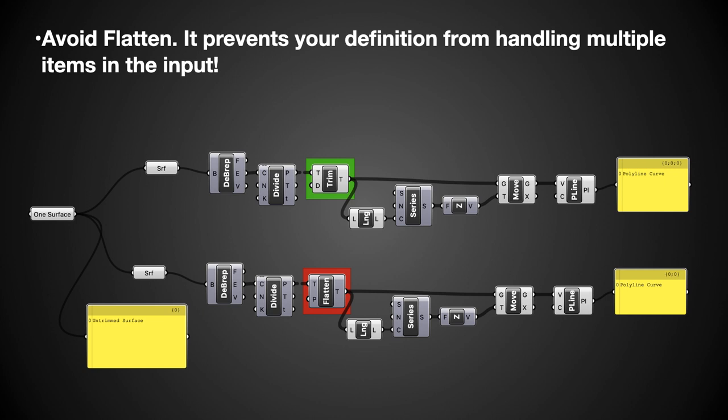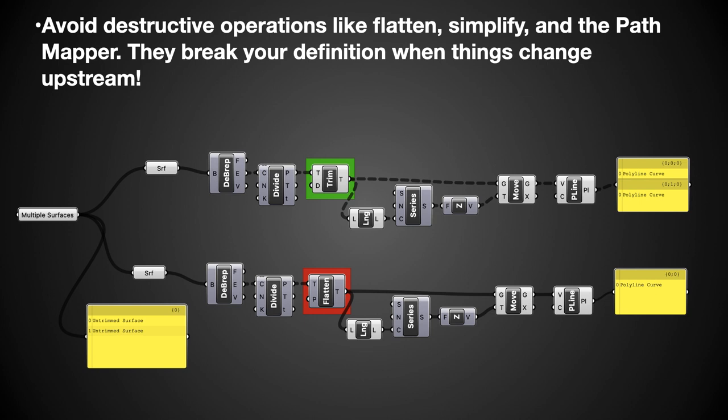You should avoid flatten in most cases. It prevents your definition from handling multiple items in the input. So these two routines look identical in the current situation where I've got one surface on the left hand side. I'm feeding in one surface and I get one polyline out the other side. And both versions of this operation seem to do that just fine. No problem. One of them is using flatten and one of them is using trim tree or shift paths in order to relatively flatten the data that's going into it. And the reason why this is important is because flatten is a destructive operation. And when I feed it multiple surfaces, it's going to give me back a single polyline instead of what I wanted, which is one polyline per input surface. So trim tree will allow you to be flexible to not knowing about the structure of the data that's coming in. It's a relative operation. It just shifts you one level instead of shifting all the levels at once.